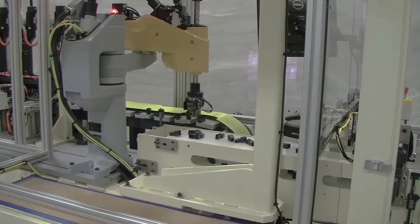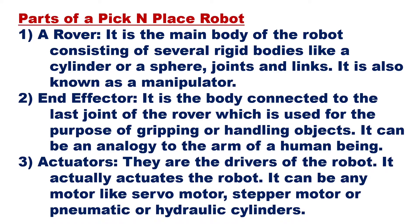Looking at the parts of a pick and place robot, the first part is called the rover, which is the same as the manipulator. It is the main body of the robot consisting of several rigid bodies like cylinders or spheres, joints, and links. It is also known as the manipulator.